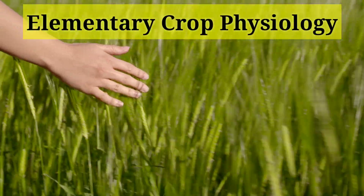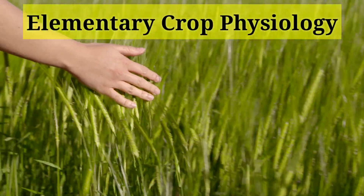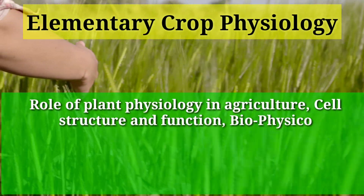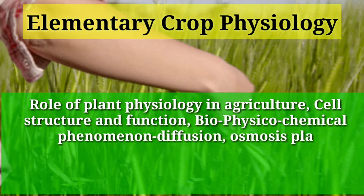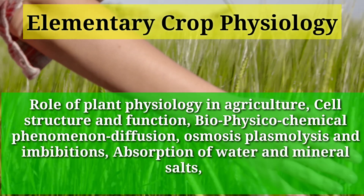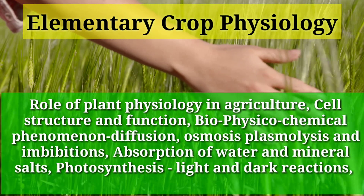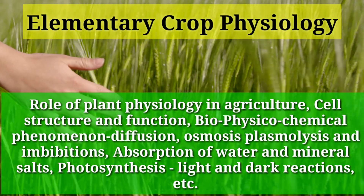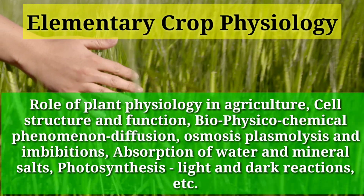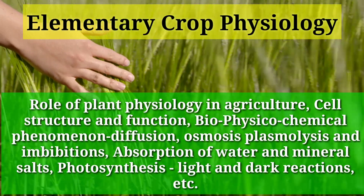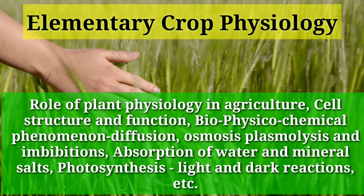Elementary crop physiology covers the role of plant physiology in agriculture, cell structure and function, biophysical and chemical phenomena such as diffusion, osmosis, plasmolysis and imbibition, absorption of water and mineral salts, photosynthesis, and light and dark reactions.